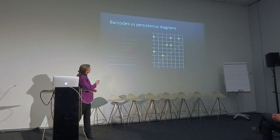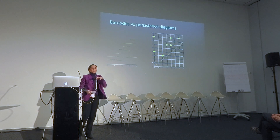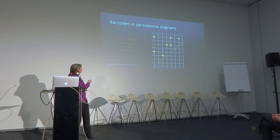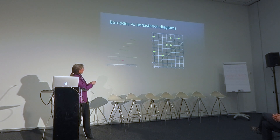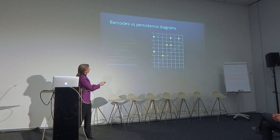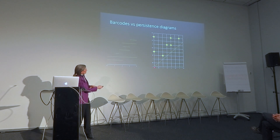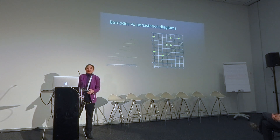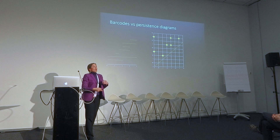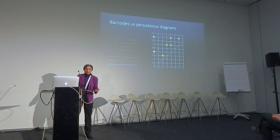Another way to interpret this data is to convert a barcode into what's called a persistence diagram — an equivalent way of tracking the same information which can be more useful in certain contexts. You look at where each bar starts and where it ends. That pair of birth and death give us coordinates — the birth axis and the death axis. So a bar that lasts from zero filtration to the second filtration is born at zero, dies at second. Each one of these bars is converted into a point in the upper right-hand quadrant of the plane, producing what's called a persistence diagram. This is the usual output of topological data analysis techniques.